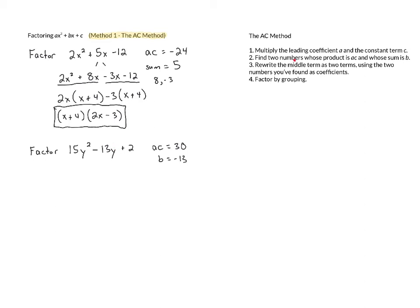And we need to find two numbers whose product is ac and whose sum is b. So we need a product of 30 and a sum of negative 13. Those numbers are going to be negative 10 and negative 3.